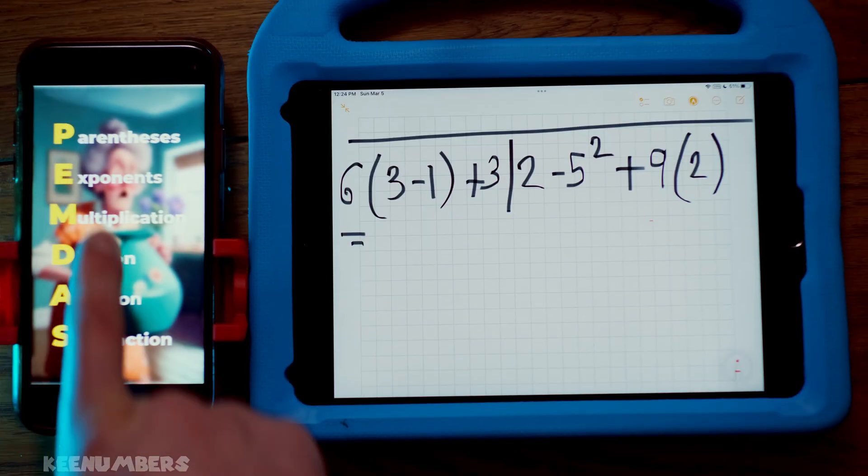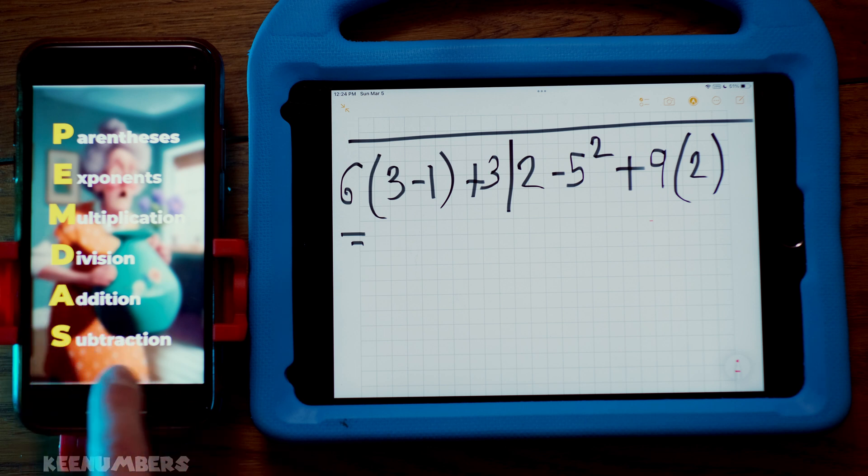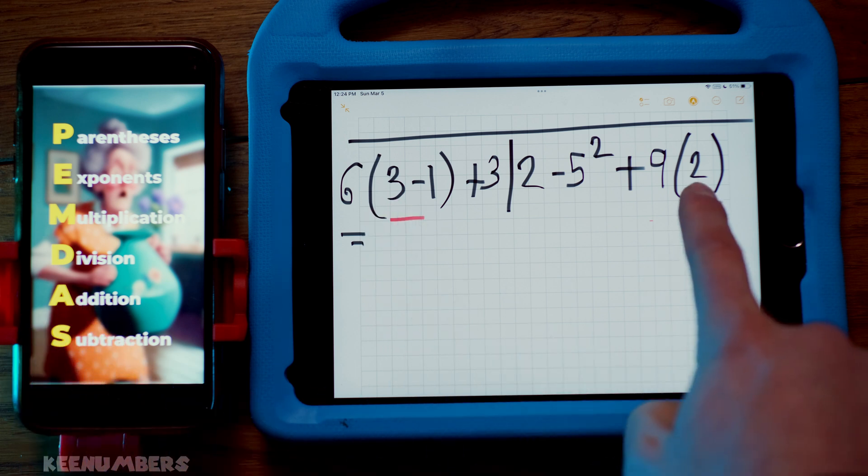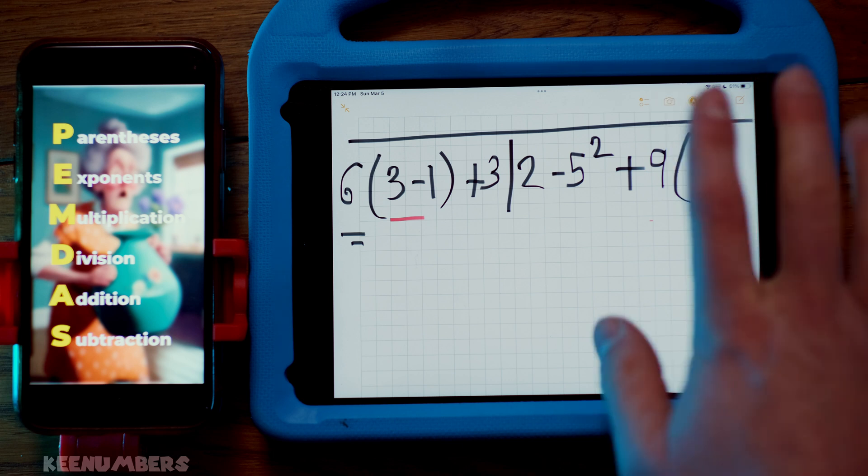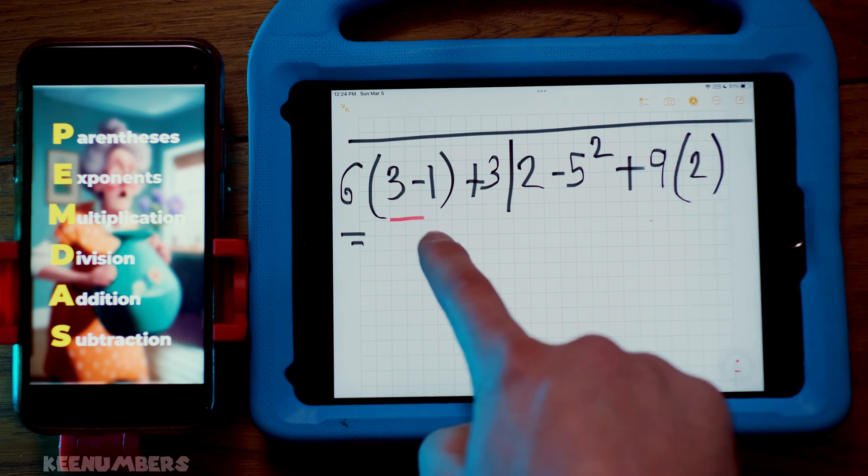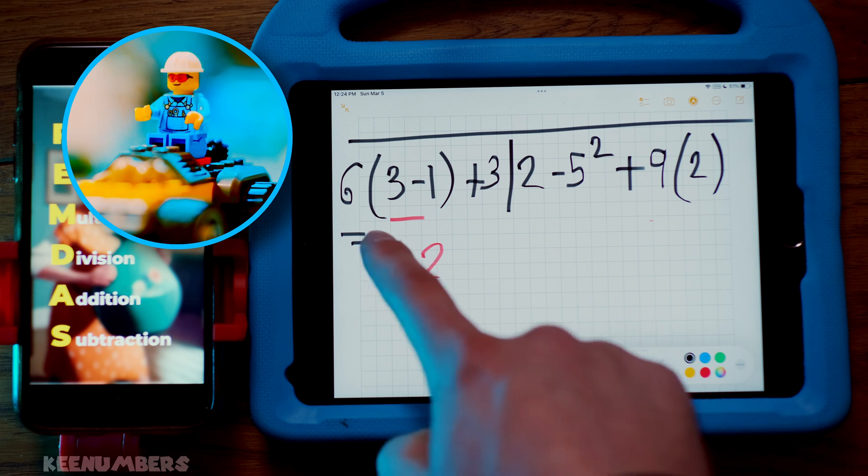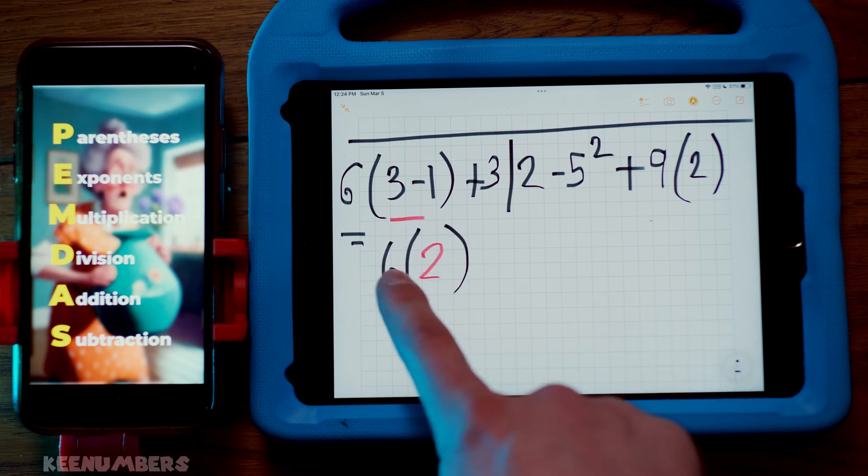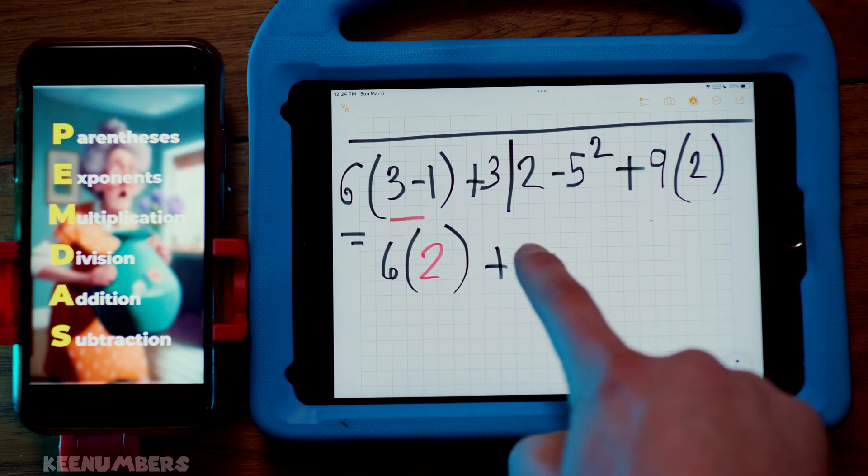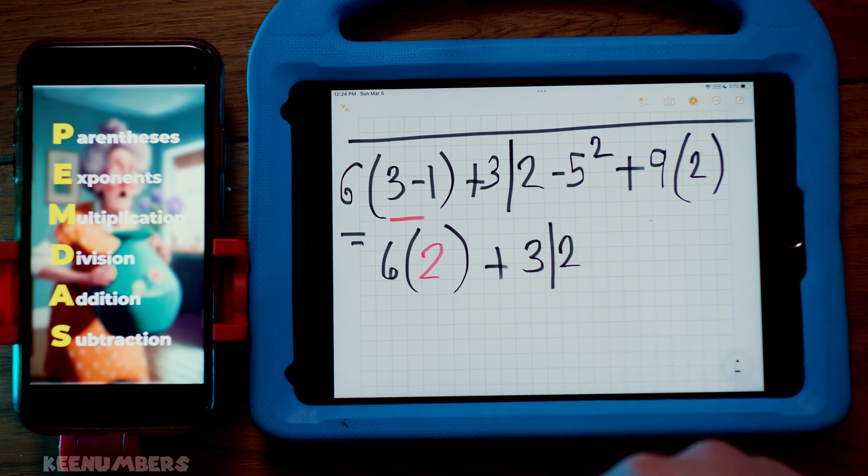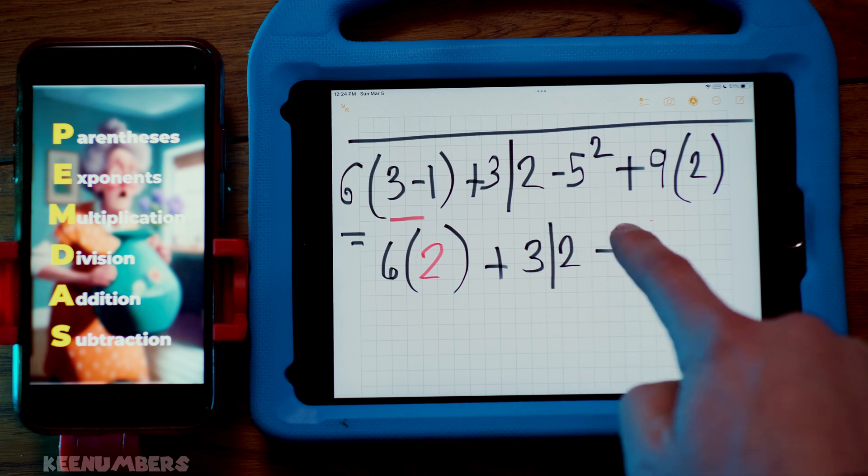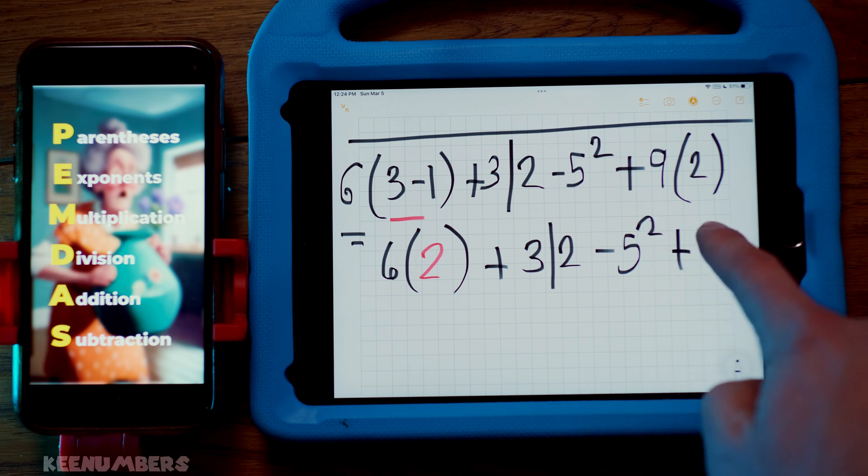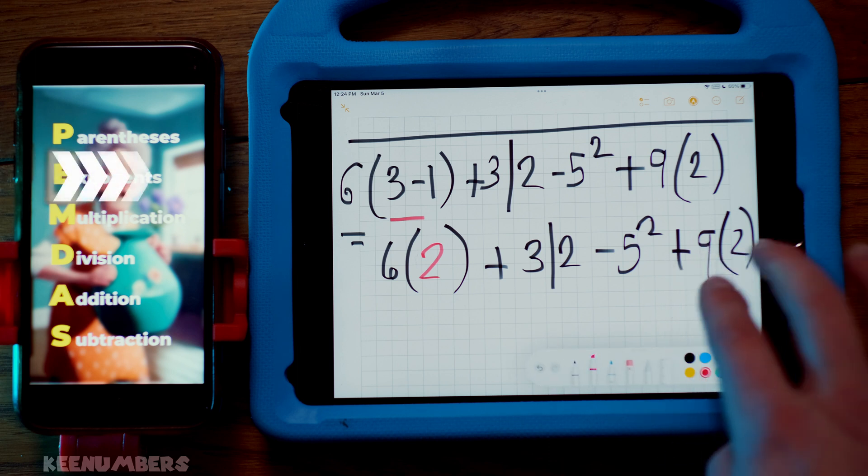Please excuse my dear Aunt Sally. Parentheses, exponents, multiplication, division, addition, and subtraction. Let's focus on these parentheses first. And nine by two, we can look at that, or we can wait till the multiplication step. Doesn't matter. There's no exponents here. Let's press on. Three minus one is two. And you're gonna multiply this by six, because now these parentheses act like a multiplication. You're gonna add three, which is then divided by two. And then you're gonna subtract five squared. Whoa, it's kind of scary looking. And then you got nine by two.